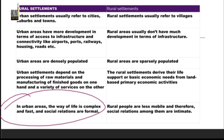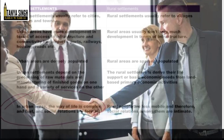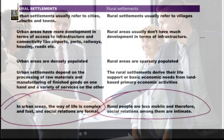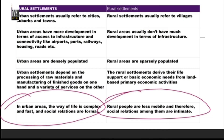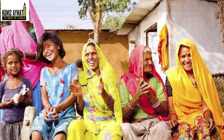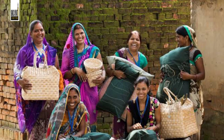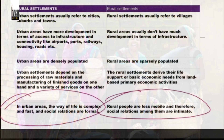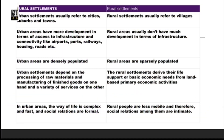In urban areas, life is complex and social relationships are more formal — there are no very close personal relationships. In rural areas, life is less mobile, so people interact more with each other and their relationships are very informal and close. These are the five basic differences between urban and rural settlements, and your five-marks question is totally prepared.